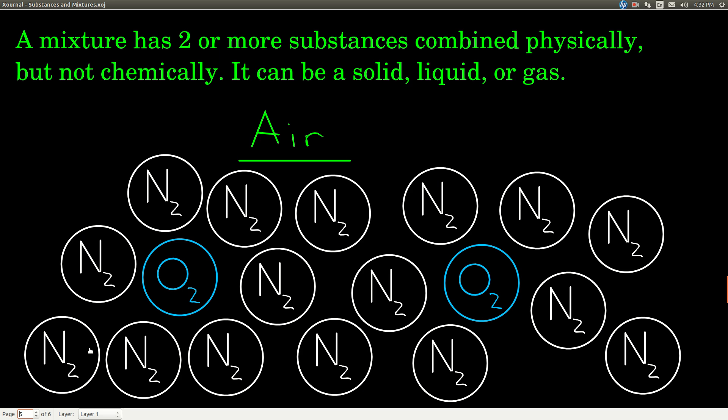Now a mixture has two or more substances that are combined physically but not chemically. They're separate compounds or elements. For example, air is a mixture, and the main components of air are nitrogen and oxygen.